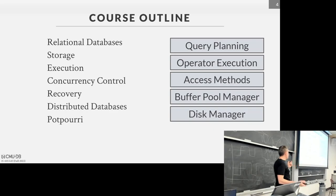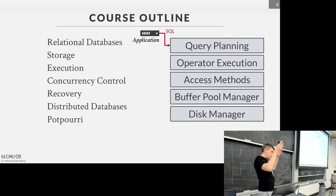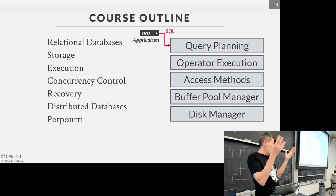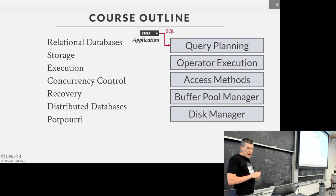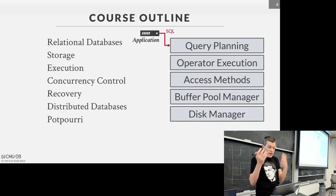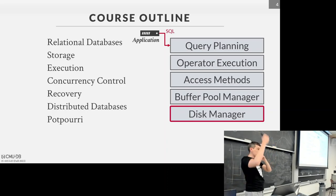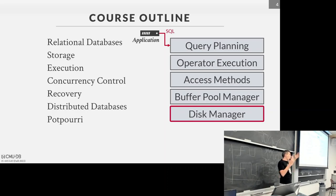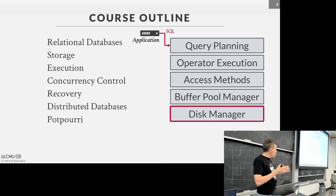The way to think about a DBMS is as a bunch of layers. The application issues a SQL query, which gets parsed, then runs through the query optimizer. Below that we start executing the query plan. There are access methods to talk to tables or indexes, a buffer pool manager to manage memory, and at the lowest level a disk manager responsible for reading and writing data to disk. We'll start at the bottom and work our way up. Concurrency control and recovery will permeate the entire system, so we'll revisit all these layers when we get there.